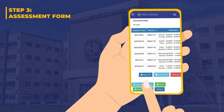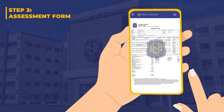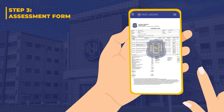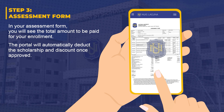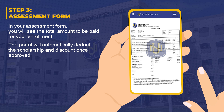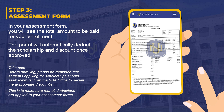Step 3: Assessment form. Once registered, proceed to the assessment part of the enrollment process. In the assessment section, you will see the total amount to be paid for your enrollment. The portal will automatically deduct the scholarship and discount once approved. Before enrolling, please be reminded that students applying for scholarships should seek approval from the SA office to secure the appropriate discounts. This is to make sure that all deductions are applied to your assessment forms.